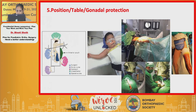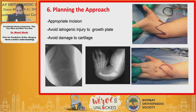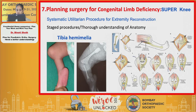Planning the approach is also tricky. In surgeries like radial club hand, unless you take an appropriate incision after deformity correction, there may be soft tissue stretch and wound complications. If you are planning any canal or nail entry, ensure you are not causing any injury to the growth plate or damage to the cartilage.